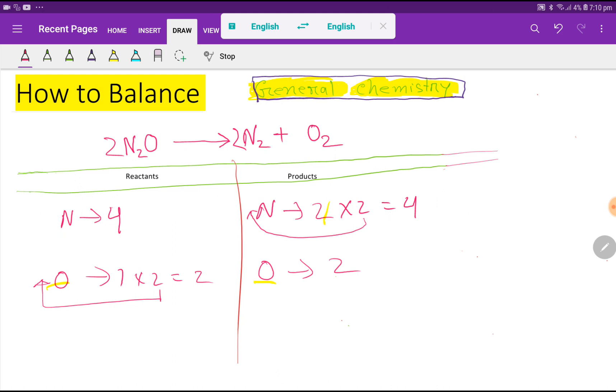So 2N2O gives 4 nitrogen and 2 oxygen; 2N2 gives 4 nitrogen and O2 gives 2 oxygen. So you can say that this is the balanced reaction. At last, you can replace this arrow sign with an equal sign. So this is the balanced equation. Thank you for watching this video. Be well.